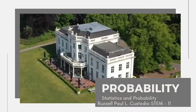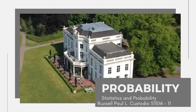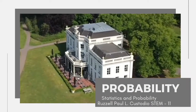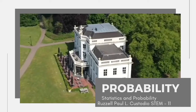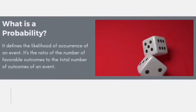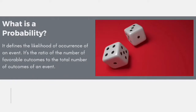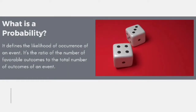Hello everyone, my name is Russell Paul L. Custodio from STEM 11, and this is my activity about probability. So what is probability? It defines the likelihood of occurrence of an event. It's the ratio of the number of favorable outcomes to the total number of outcomes of an event.